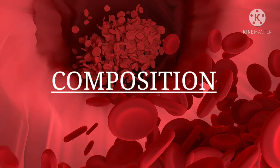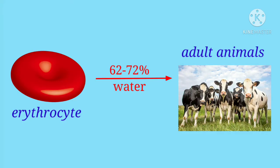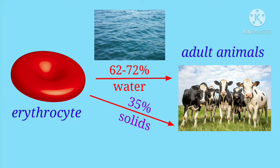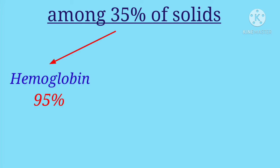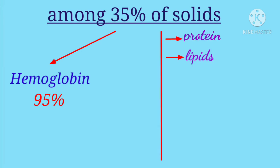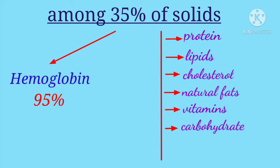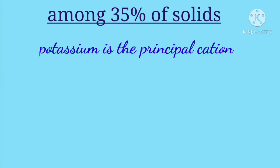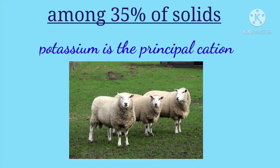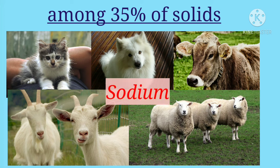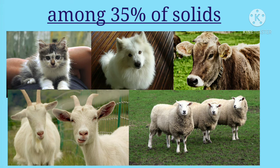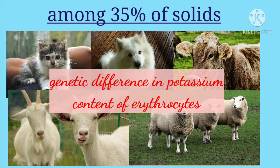Let's study about the composition of erythrocytes. Erythrocytes in adult animals contain 62 to 72% of water and the remaining 35% consist of solids. Among 35% of solids, hemoglobin constitutes about 95% of solids. The remaining solids are proteins, lipids, cholesterol, natural fats, vitamins, carbohydrates, enzymes, minerals, etc. Remember that potassium is the principal cation of erythrocytes in some species like pig, chicken, and some breeds of sheep. Whereas in other animals like cat, dog, cow, goat and sheep, the principal cation is sodium. Chlorine is the principal anion in all species. It is well documented that domestic animals exhibit genetic differences in potassium content of erythrocytes.